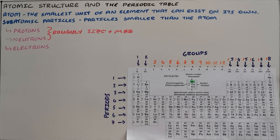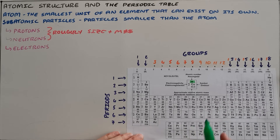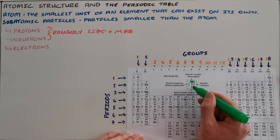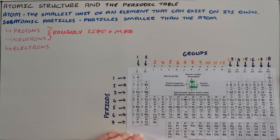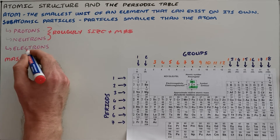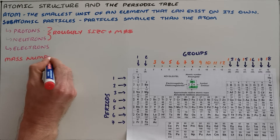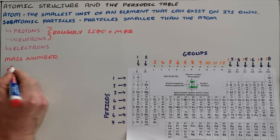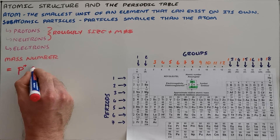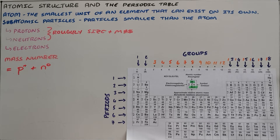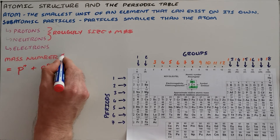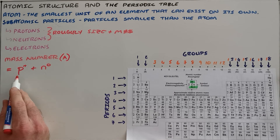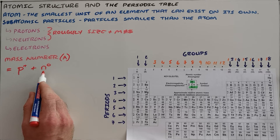On the periodic table we find the atomic number, which gives us the number of protons. Another number always found on the periodic table is called the mass number, sometimes referred to as the atomic mass, but we prefer to call it the mass number. The mass number gives us essentially the mass of the nucleus — because electrons are so light, the mass number is simply the number of protons plus the number of neutrons. So our mass number, which has the symbol A, is the sum of protons and neutrons in a nucleus.